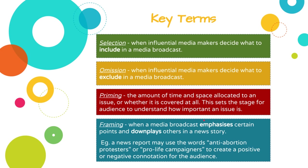Two new terms to learn are priming and framing. Priming is where the amount of time and space allocated to an issue — or whether it's covered at all — sets the stage for the audience to understand just how important the issue is. A really easy way to think about this is to think about a newspaper: if it's the only story on the front page, the audience is primed to understand that is the most important issue of the day, whereas if it appears in a one-eighth corner on page 52, the audience will understand it to be less important.